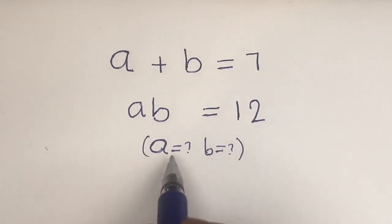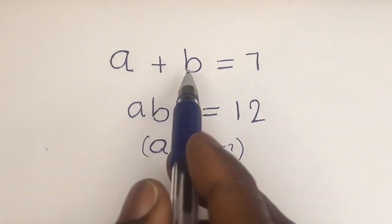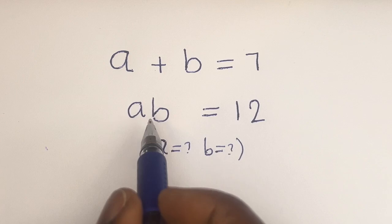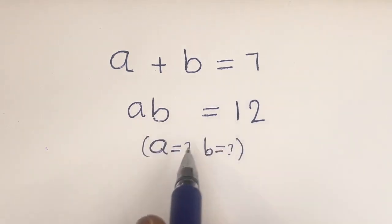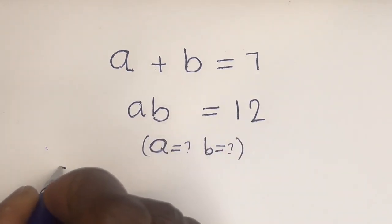Hello, how to solve for a and b in this equation: a plus b is equal to 7, and ab is equal to 12. Solution.